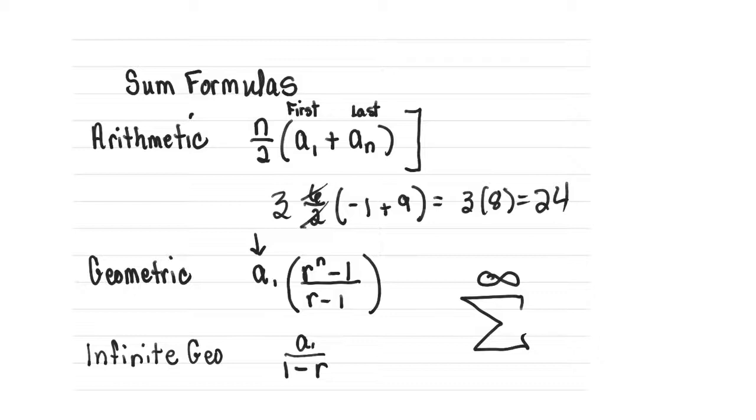If it's geometric, then you take the first term and multiply it by r to the number of terms minus 1, all over r minus 1. Infinite geometric, which you won't have any of, is just the first term over 1 minus the ratio.